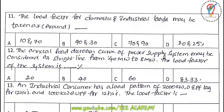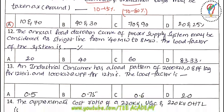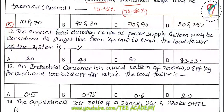Next question: the load factor for domestic and industrial loads may be taken approximately as — for domestic purposes it is around 10 to 15 percent, and for industrial loads it is around 70 to 80 percent. Load factor is the ratio of average demand to maximum demand, which is always less than one. Option A is the correct answer.